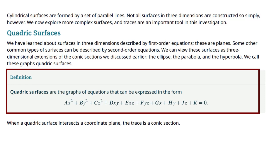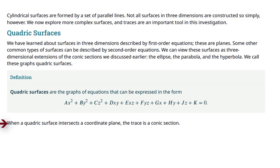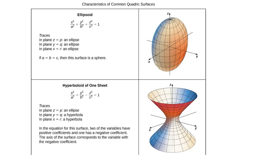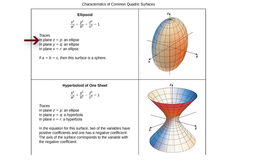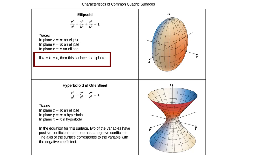When a quadratic surface intersects a coordinate plane — the xy plane, the yz plane, or the xz plane — the trace in two dimensions will be a conic section. An ellipsoid has the equation x²/a² + y²/b² + z²/c² = 1, and each of the traces is an ellipse. Of course, if all the denominators are equal then we have a sphere and not an ellipse.